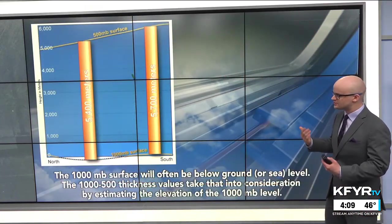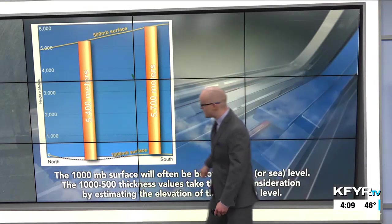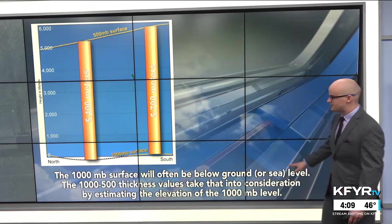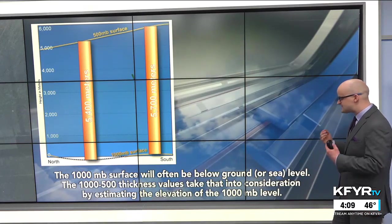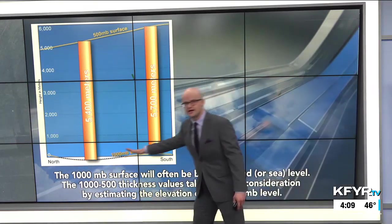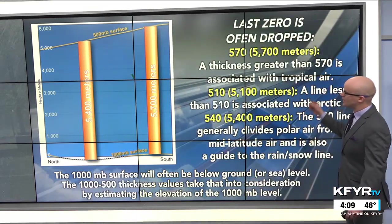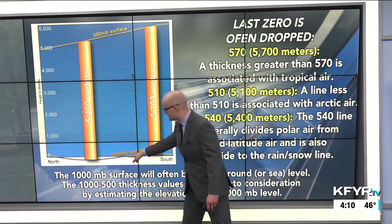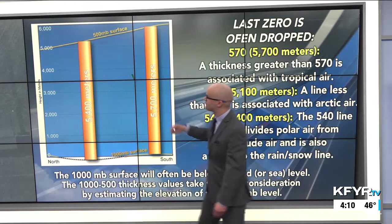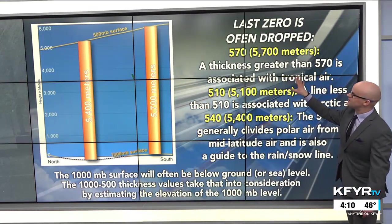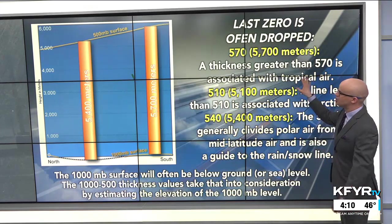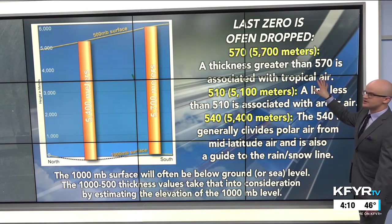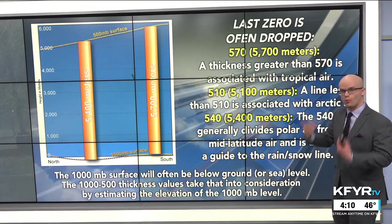We measure this in meters, typically in thousands of meters. The 1,000 millibar surface will often be below ground or sea level with the 1,000 to 500 millibar thickness values, taking elevation into consideration. The last zero is often dropped — so if the difference in height between 1,000 and 500 millibars is about 5,700 meters, we call it a 570 thickness value. A thickness greater than 570 is associated with tropical air masses — larger thickness means warmer air.